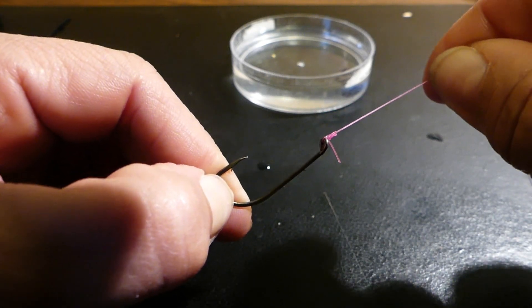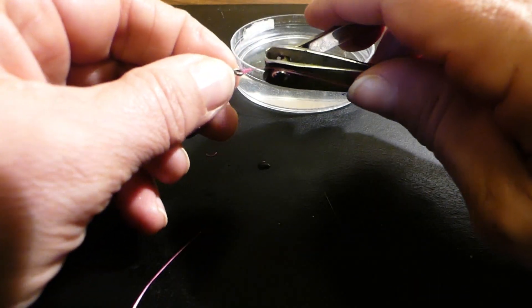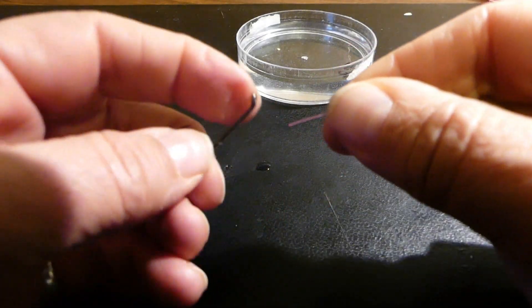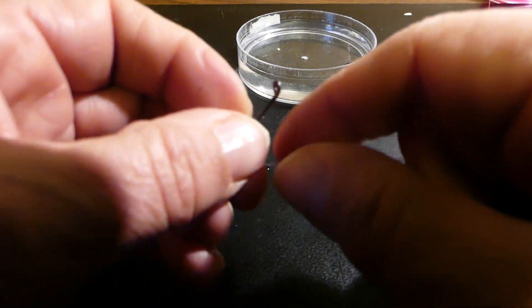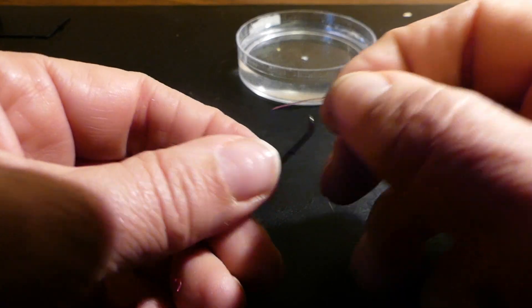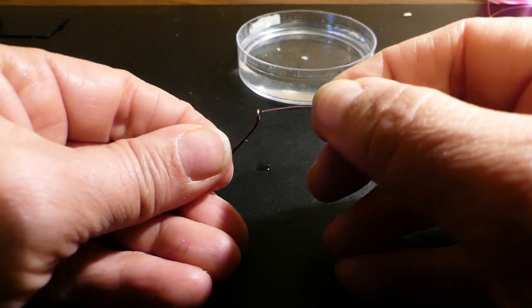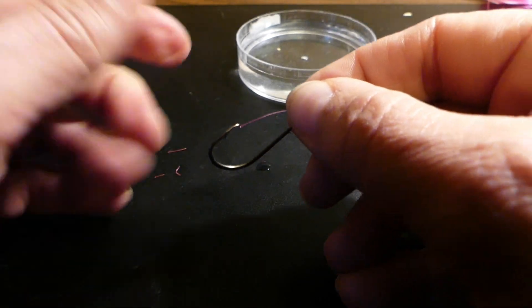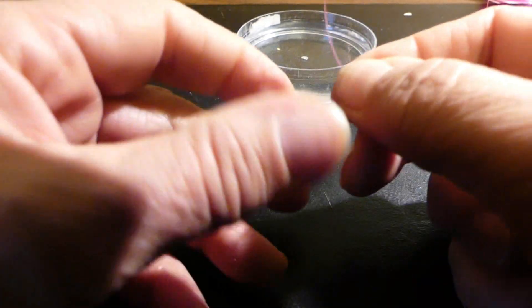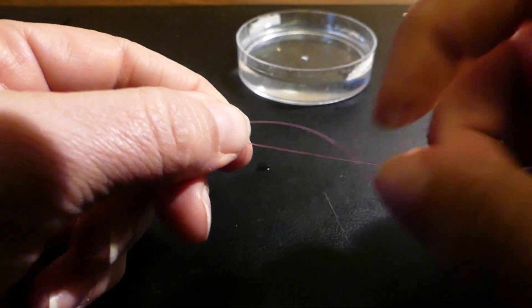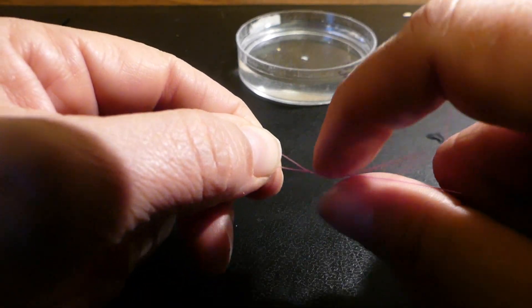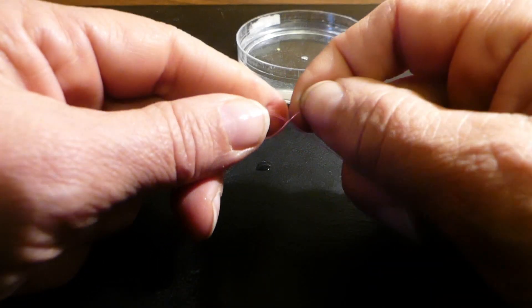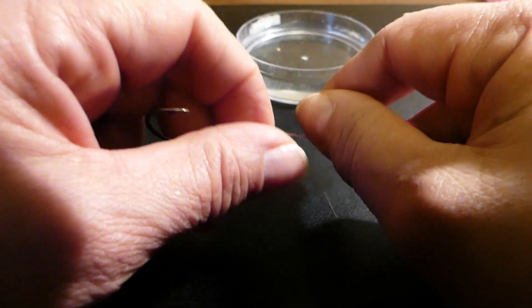Now I'm going to show you another way of tying this knot. It's called a double clench or a modified clench knot. We're going to do the same thing that we did the last time except we're going to add one more step to this knot. We're going to thread it through the eye, bring the tag end back again, and wrap it around the main line about six times like we did the last time.